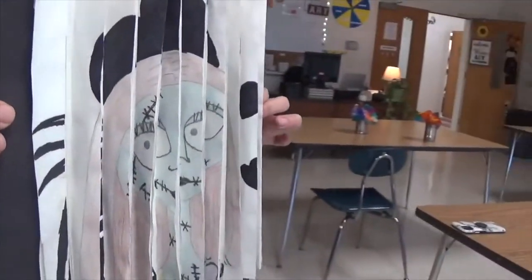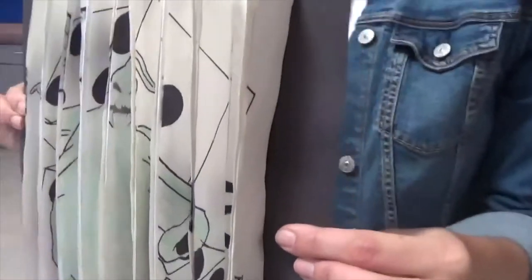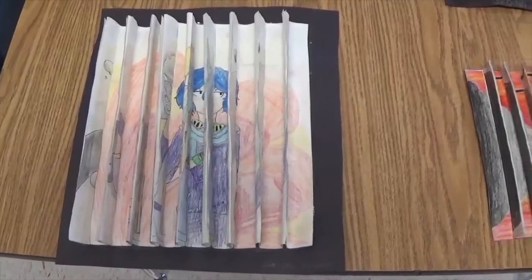An agamograph is a type of artwork composed of two or more separate images. As the viewer passes by the artwork, the image morphs from one image to the second and the third, creating an illusion.